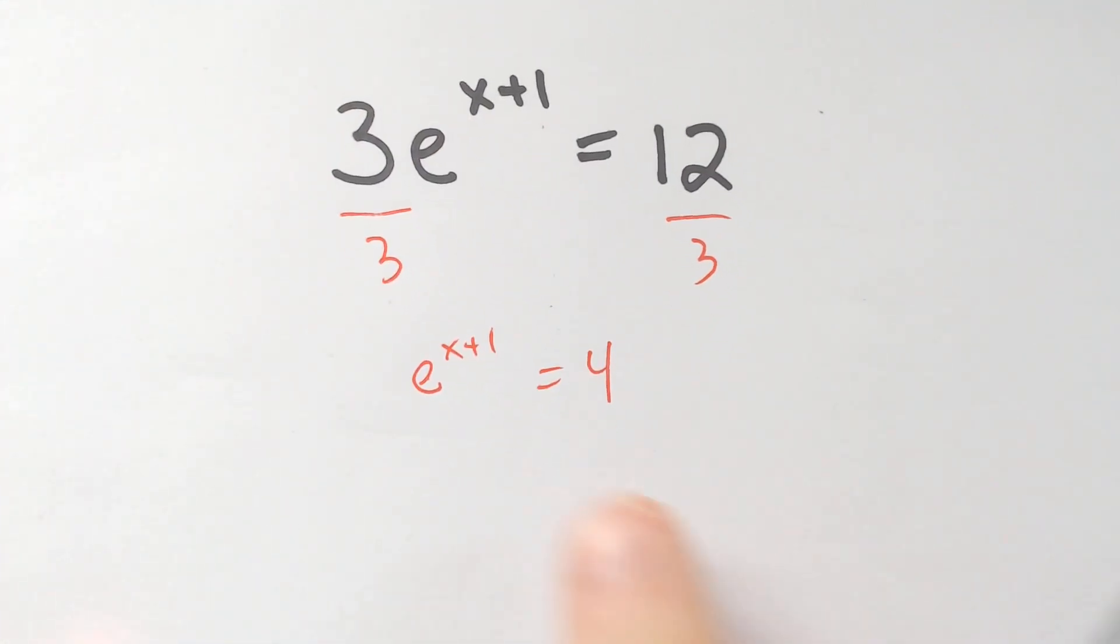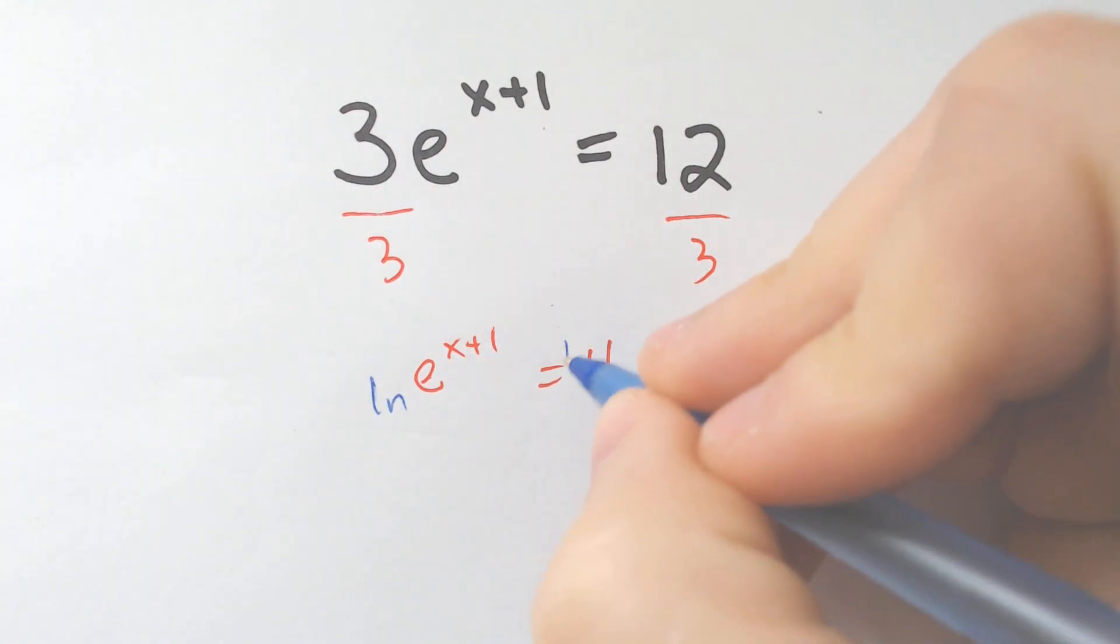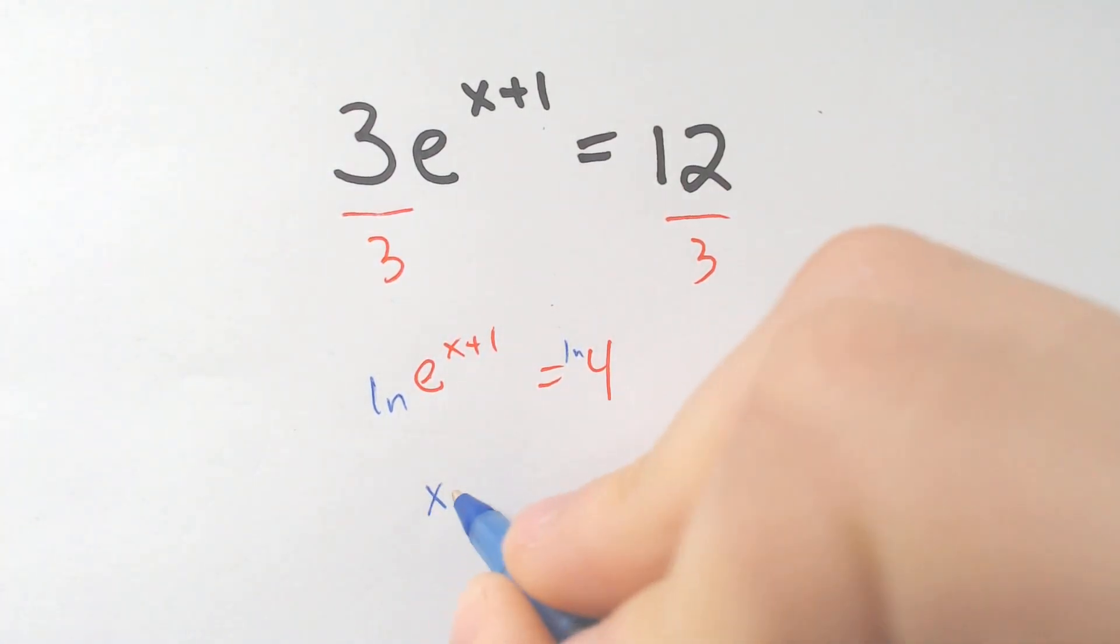And then, in order to get rid of E, you would have to LN both sides. So LN, LN, X plus 1 would drop down, would equal the LN of 4.